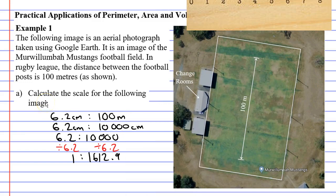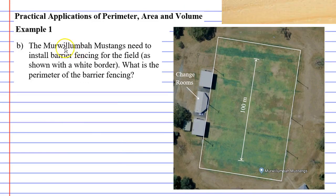We've completed question A. We've got our scale here. We'll now move on to question B. The Mwoolumba Mustangs need to install barrier fencing for the field, as shown with the white border. What is the perimeter of the barrier fencing? We'll write down our scale, 1 to 1,612.9, meaning everything you see in the image is 1,612.9 times bigger than that.